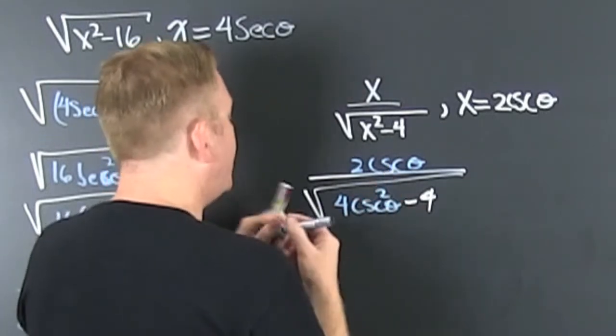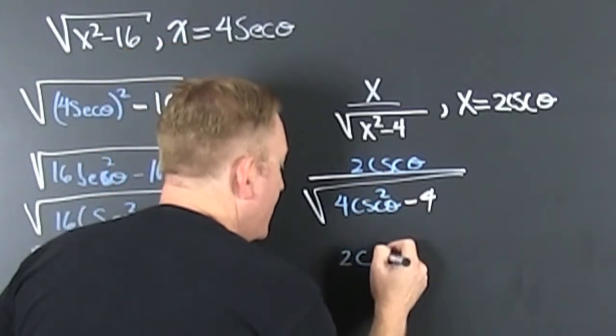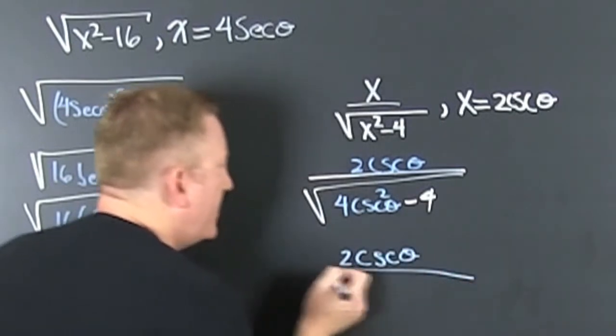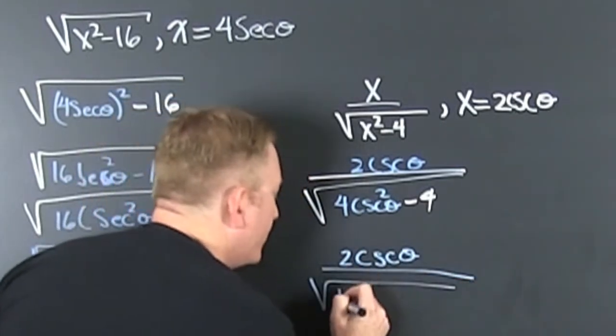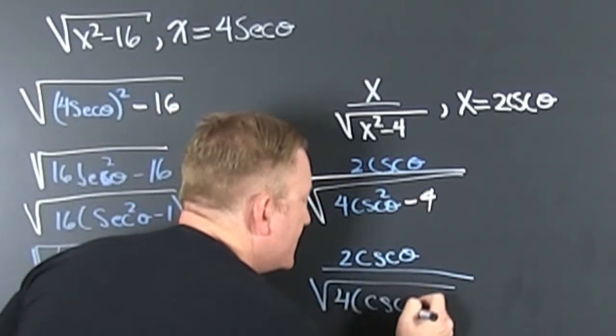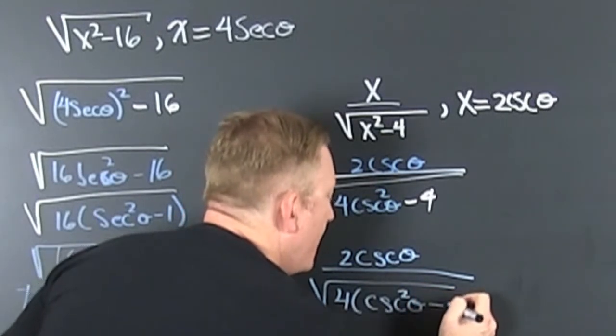Now what? I want to see what that is. So I have a two times the cosecant theta divided by the square root of four times cosecant squared theta minus one.